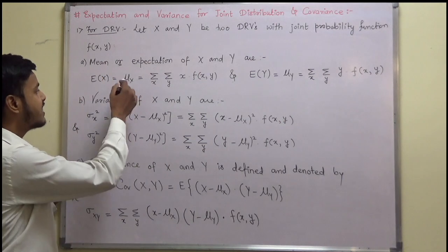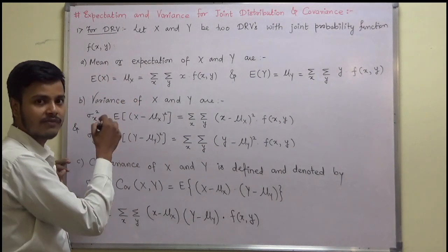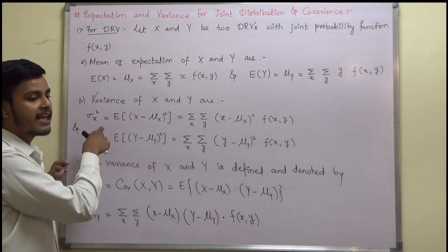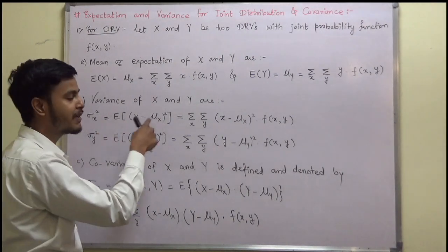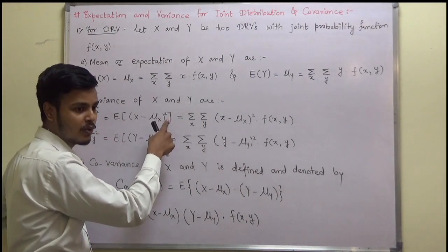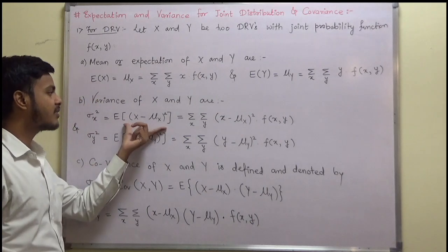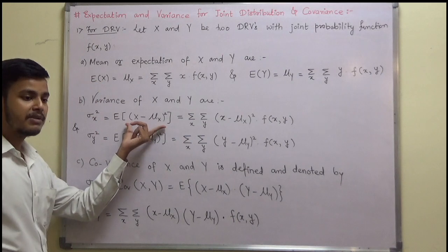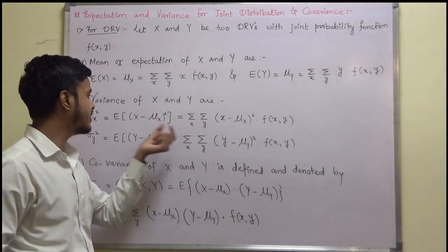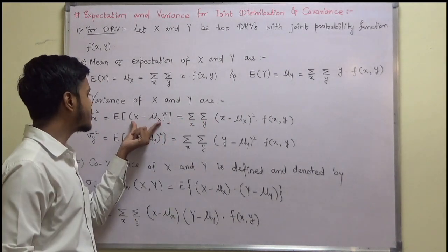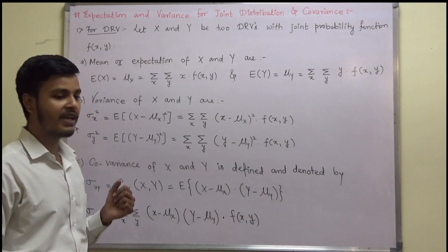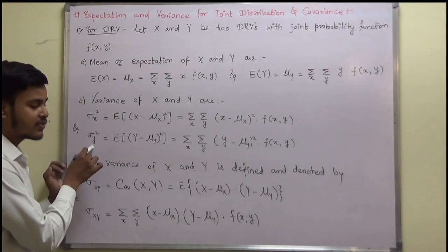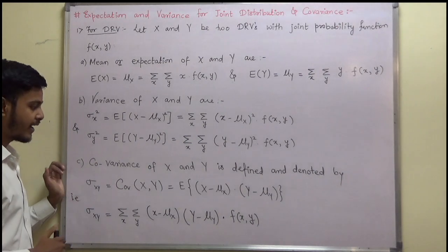After defining expectation, we just have to define the variance, and we know what is the definition of variance. Variance can be defined as expectation of (x minus mu x) squared, and if you wish to write in terms of summation for the discrete random variable, you can write double summation over x and y of (x minus mu x) squared times f of x, y. And likewise you can define the variance for the random variable y.